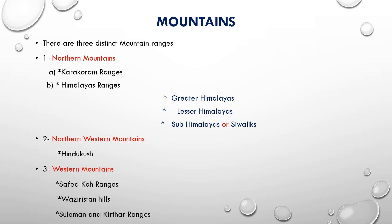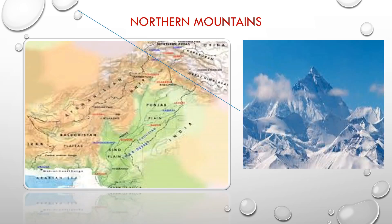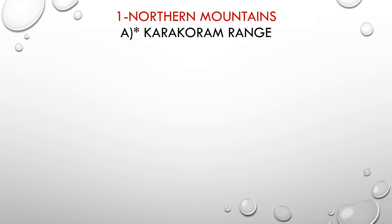In this image you can see the northern mountains. On the Pakistan map, the white patch in the northern area shows the Karakoram and Himalaya ranges. The second image is a clearer image of the Karakoram and Himalaya ranges. Now, in the mountains of Pakistan, we will first study the northern mountains.